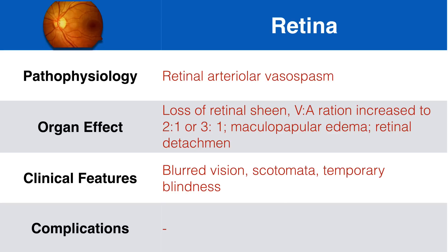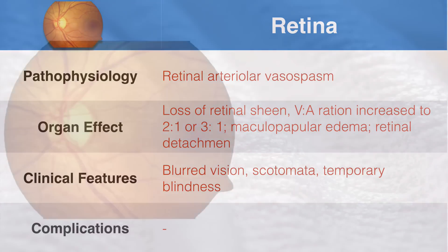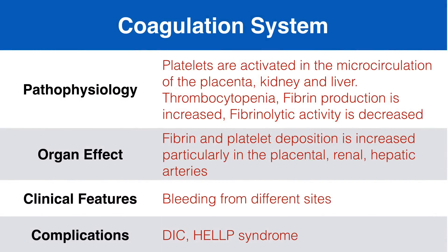Changes seen in the retina are arteriolar spasm, hemorrhage, exudation, and rarely in severe cases, exudative retinal detachment. These are responsible for the characteristic changes seen on fundoscopy and for reversible blindness. As far as the coagulation system is concerned, there is thrombocytopenia, fibrin production is increased, fibrinolytic activity is decreased, and factor 7, factor 8 related antigen and fibrin degradation product concentrations in the plasma are all increased. Fibrin and platelet deposition is increased, particularly in the placental arteries. Platelets are activated in the microcirculation of the placenta, kidney, and liver. The end result is hypercoagulability and disseminated intravascular coagulation in severe pre-eclampsia and eclampsia.